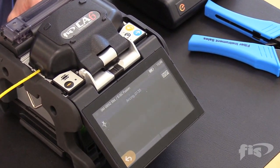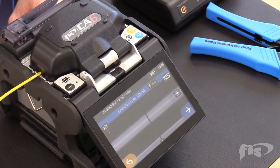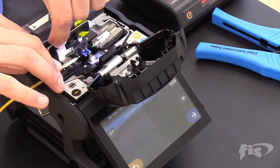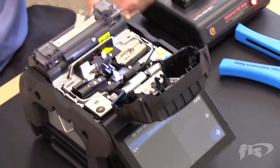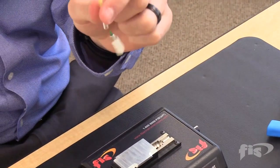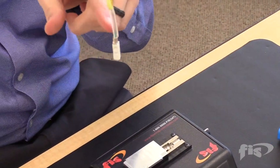The splice is complete with the estimated loss on top. Open the lid of the fiber holder and gently pull the fiber right out of the splicer. While securing the Kevlar, slide down the splice sleeve so it grabs both sides of the 900-micron buffer.